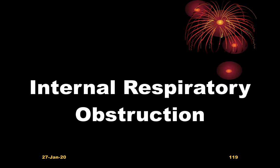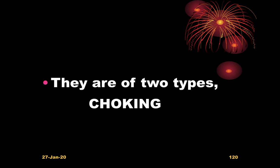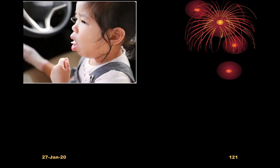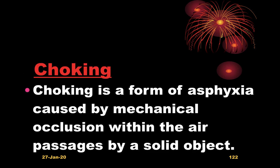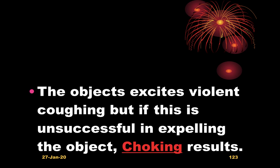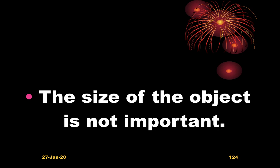Internal respiratory occlusion includes two types — choking and gagging. Choking is a form of asphyxia caused by mechanical occlusion within the air passages by some solid object. The object excites violent coughing, but if this is unsuccessful in expelling the object, choking results. Importantly, the size of the object is not important.